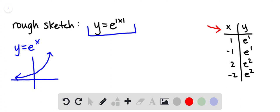So if x was 1, we would be finding e to the first. If x is negative 1, we would take the absolute value of negative 1, and we would still be finding e to the first.